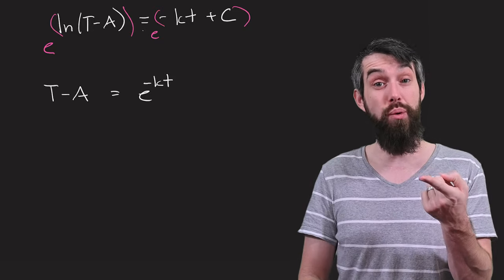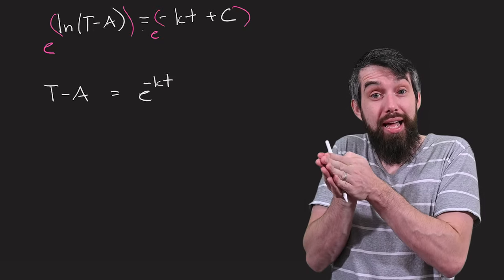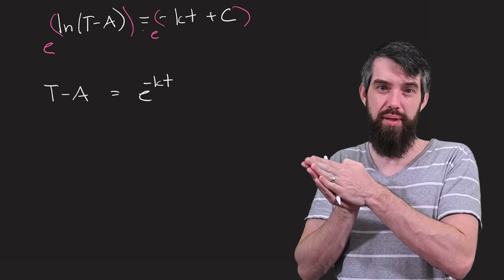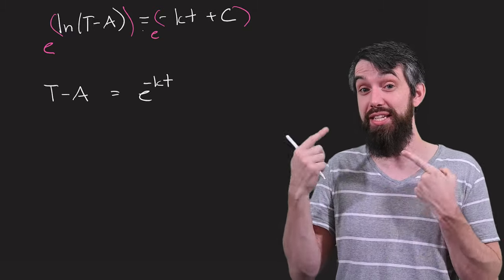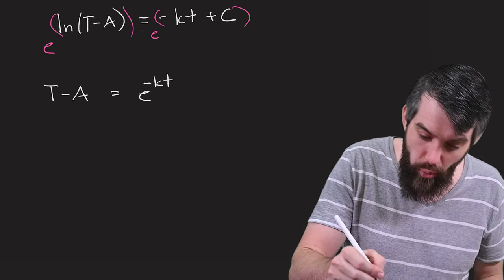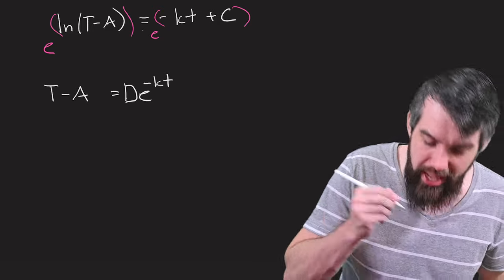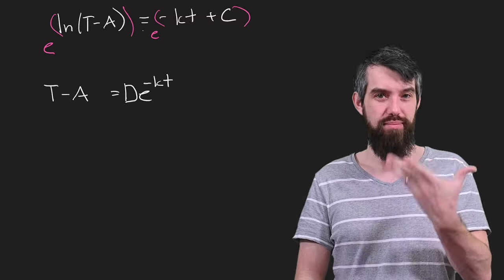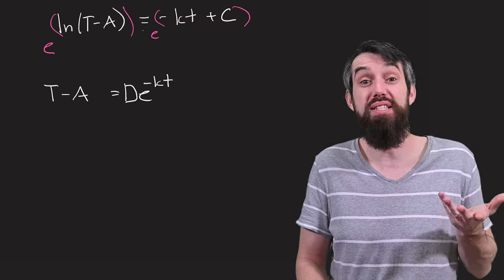The plus C is at an exponent. So it can come out as E to the C. It would then be a multiplicative constant, the multiplicative constant E to the C. But C is just some constant. E to the C is just some constant. Why don't I relabel it and call it a new constant D? It just looks a little bit simpler this way.